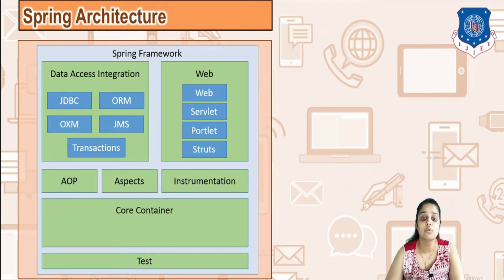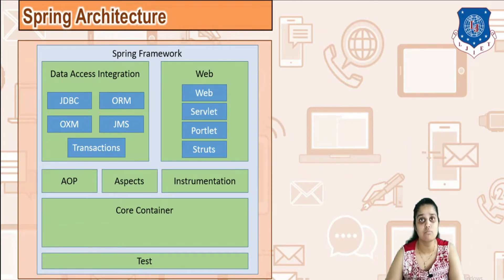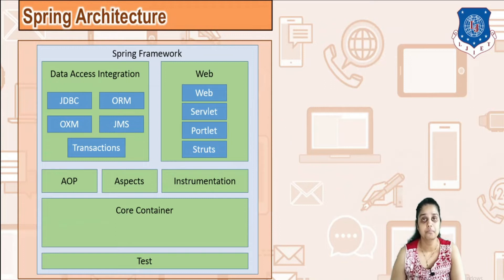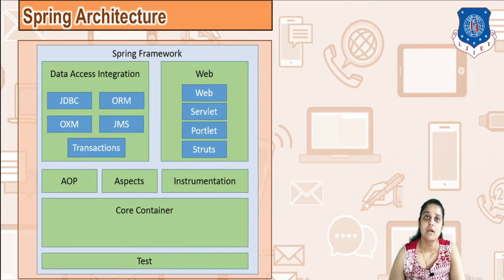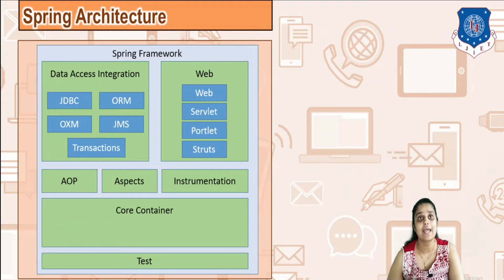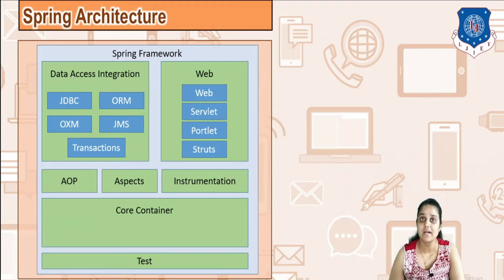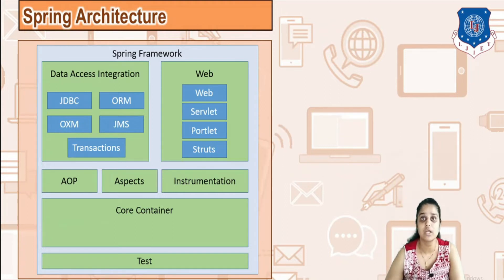Servlet, portlet, and Struts can all be implemented via the MVC or Model View Controller framework. Next is AOP — Aspect Oriented Programming — where you can very easily include new functionalities or add new code into your old code. New functionalities can be added as and when needed without major changes; that is called Aspect Oriented Programming.